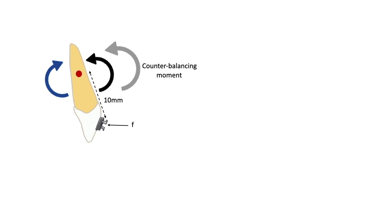To counteract the tendency for tipping, a couple can be applied intentionally to produce a counter-balancing moment of equal magnitude in the opposite direction. The force alone would cause the tooth to move in the direction of the force and the crown to tip in the same direction; the couple completely negates this tendency to tip but the tooth still moves in the direction of the force. When the applied moment is greater than the tipping forces, the tooth will translate in the direction of the force without tipping. In pure translation, the center of rotation is considered to be at infinity because no rotation occurs.